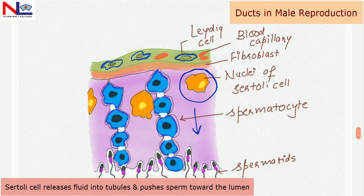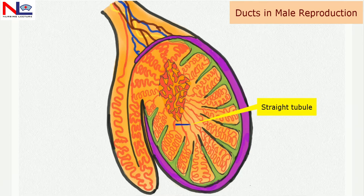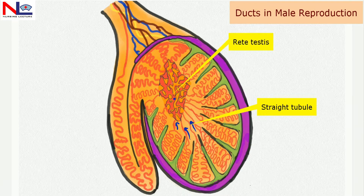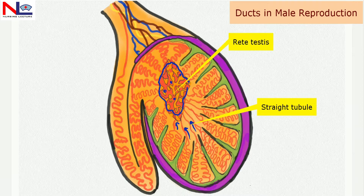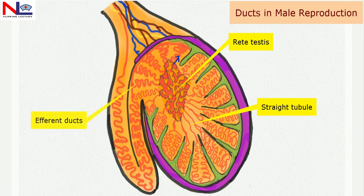The Sertoli cells push the sperm toward the lumen of the seminiferous tubule. The sperm then moves toward the straight tubules, and from the straight tubules they enter into the rete testes. 'Rete' is a Latin word meaning a network-like arrangement, and here you can see the network of tubular cells.